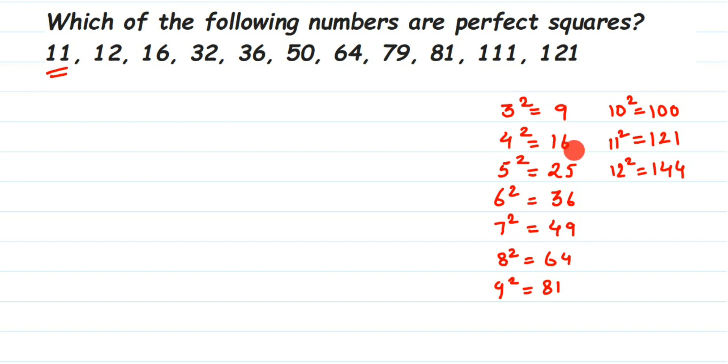Now you can see that 11 doesn't come between 9 and 16, so 11 is not a perfect square. Next we have 12, which also doesn't fit here because we have 9 and 16 directly. So 16, you can see we have 16 there, 16 is a perfect square number.